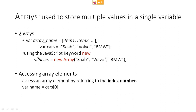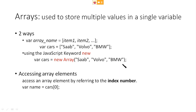Also, you can use the JavaScript keyword new to create the array. Here, the same cars array is created by using new Array(). Here, we are not using square brackets — we are using parentheses to create the array.